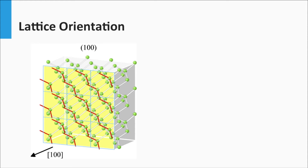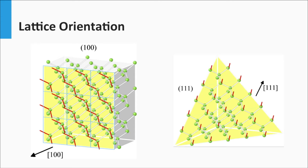We see two important surfaces. The first one is referred to as the 100 surface, and the normal of this plane points in the 100 direction. The silicon at the 100 surface always has two backbonds and two other valence electrons pointing to the front. The second surface is the 111 plane, characterized by three silicon backbonds and one valence electron pointing in the normal to the plane.